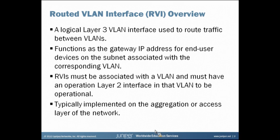So what is an RVI? A routed VLAN interface, or RVI, is a logical Layer 3 VLAN interface used to route traffic between VLANs. It typically functions as the gateway IP address for end-user devices on the subnet associated with the corresponding VLAN. RVIs must be associated with a VLAN and must have an operational Layer 2 interface in that VLAN to be operational themselves.